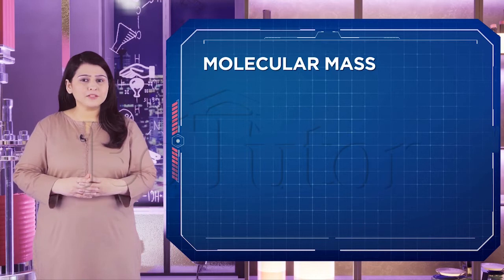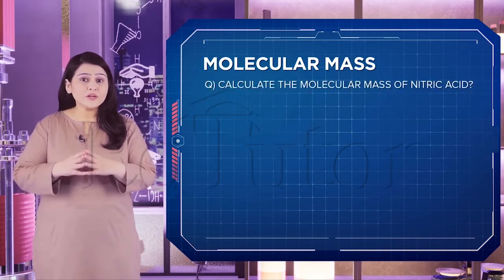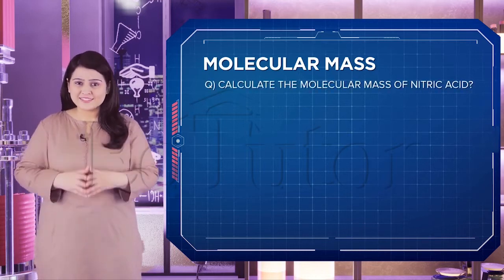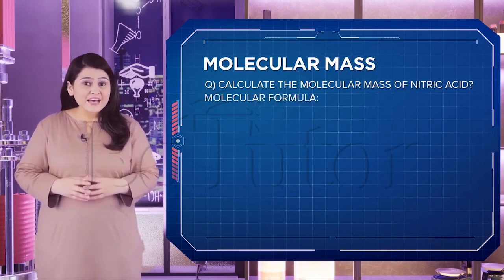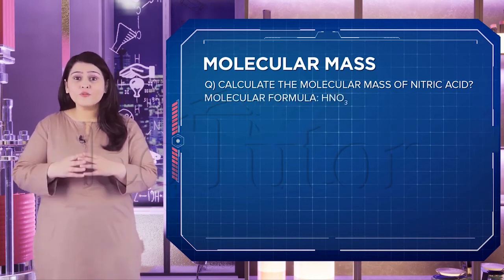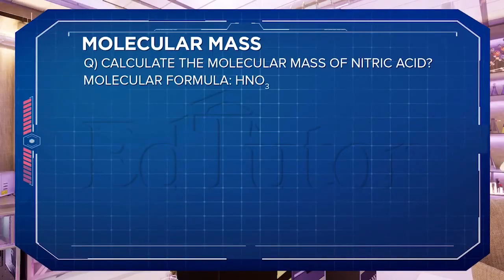Now let's look at this example question: calculate the molecular mass of nitric acid. The formula of nitric acid is HNO₃. So draw out the data first. As I told you, it is the sum of the atomic masses of atoms present in a molecule.